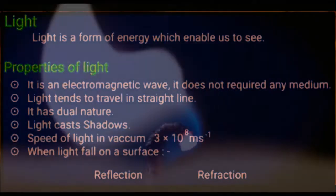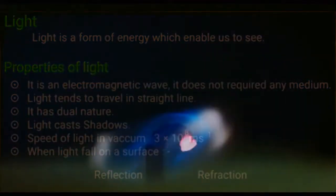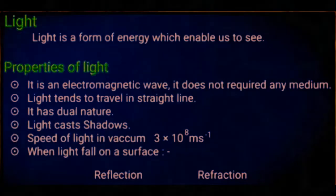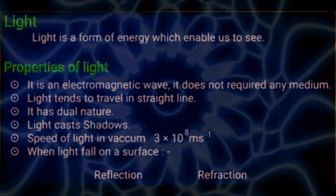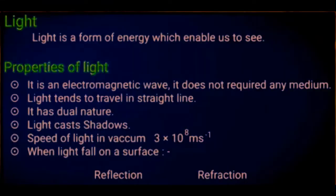Property number 2: light always tends to travel in a straight line. Number 3: it has dual nature. It means that it behaves like a wave and also behaves like a particle. Number 4: light casts shadows. Light itself cannot block other light and therefore casts a shadow.